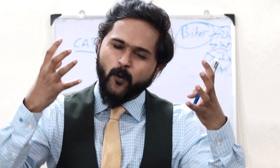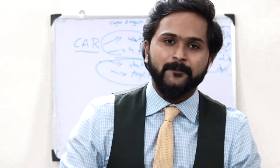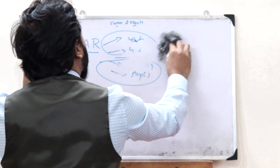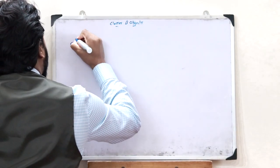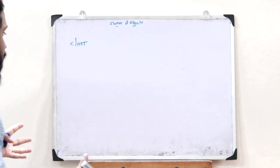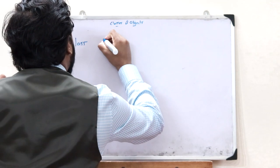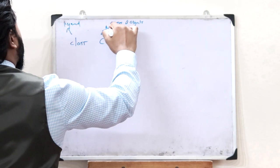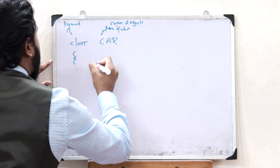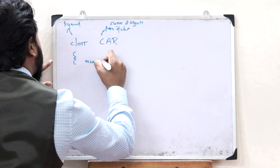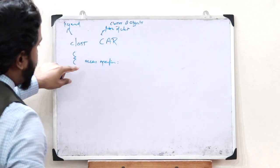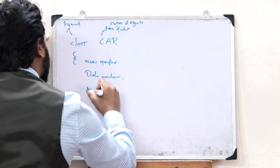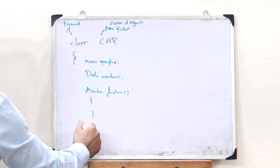In C++ programming, a class is defined using the keyword 'class'. We write 'class' followed by the name of the class — for example, 'class car'. After this we open the bracket, inside which we first specify the access specifier, then declare the data members and member functions. Once we close the class, we put a semicolon.